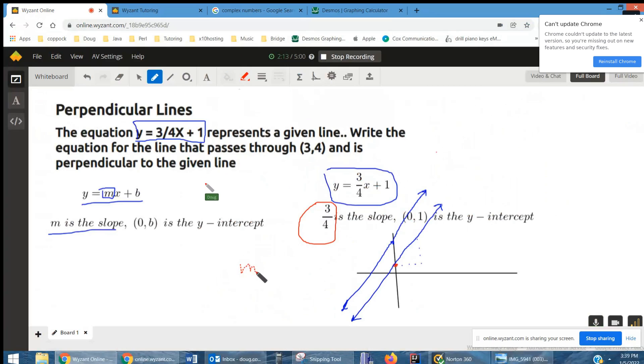the slope of the perpendicular will be the negative or opposite reciprocal, negative four-thirds.